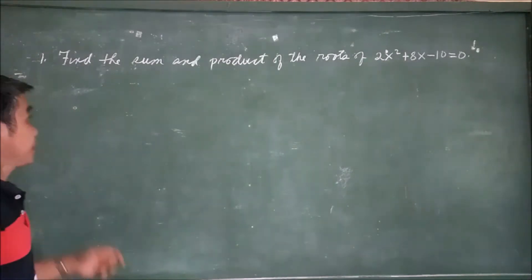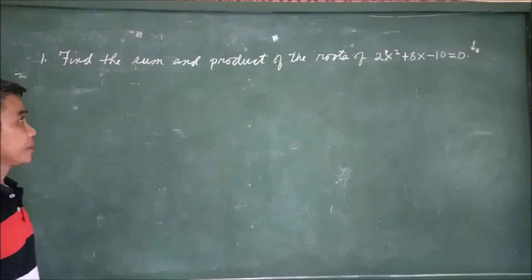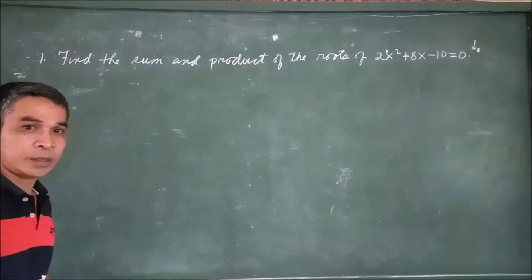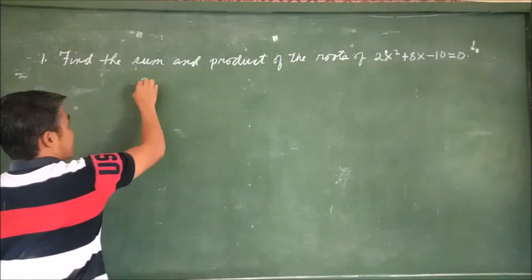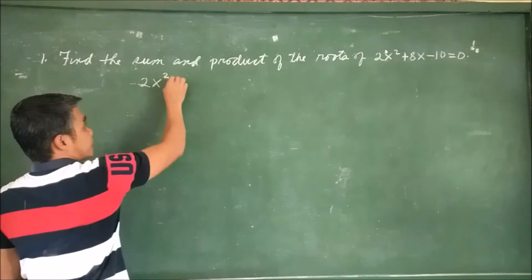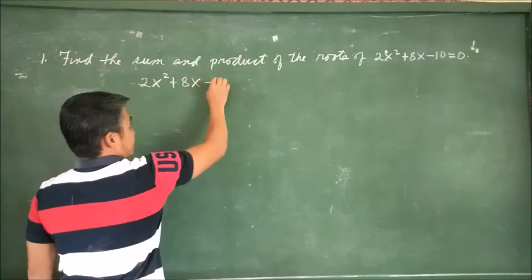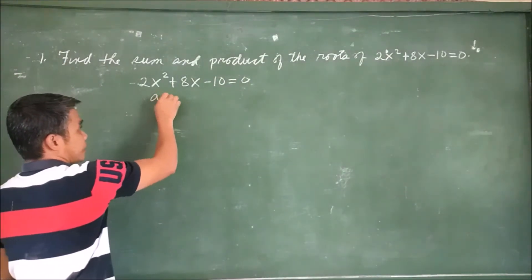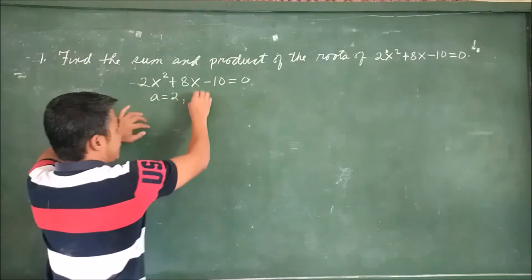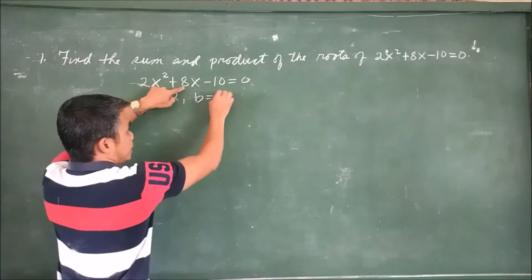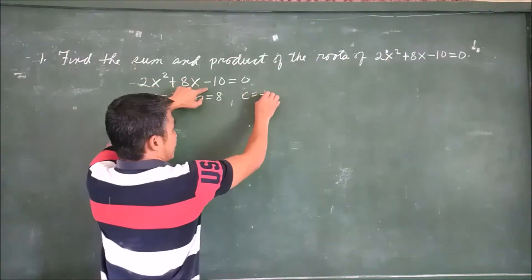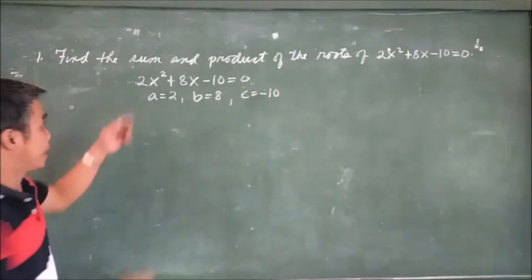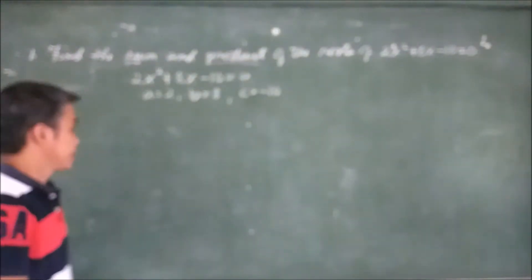For example, find the sum and product of the roots of 2x² + 8x − 10 = 0. Let's rewrite the given problem: 2x² + 8x − 10 = 0. Now let's identify a, which is 2; b, which is 8; and c, which equals negative 10.